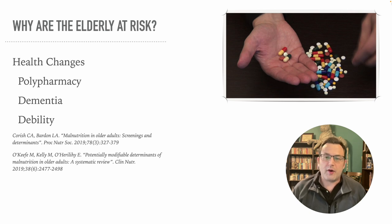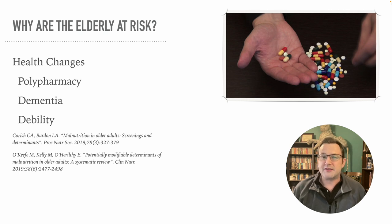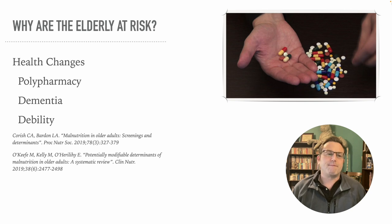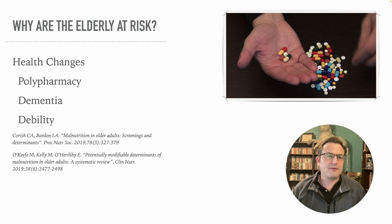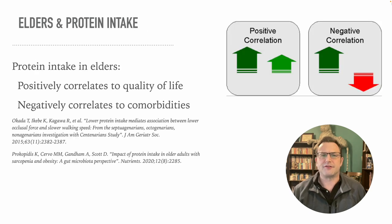Health changes also contribute. We're looking at debility, different kinds of organ disease states, chronic kidney disease, chronic heart failure. Polypharmacy is a risk factor for protein malnutrition. And dementia itself is a risk factor for protein malnutrition.